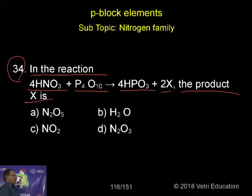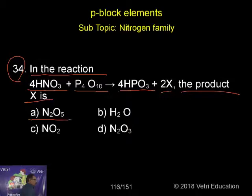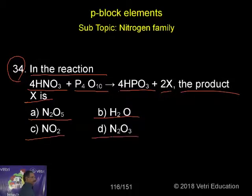So we have to balance the equation and find out what X is. The options are: A) N2O5, B) H2O, C) NO2, D) N2O3.